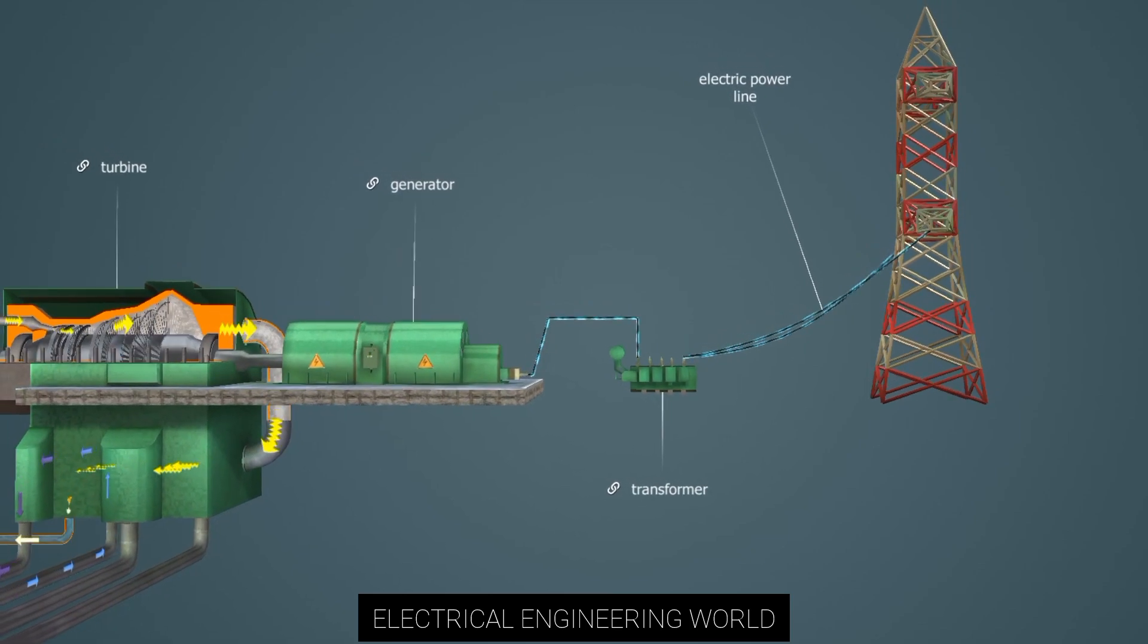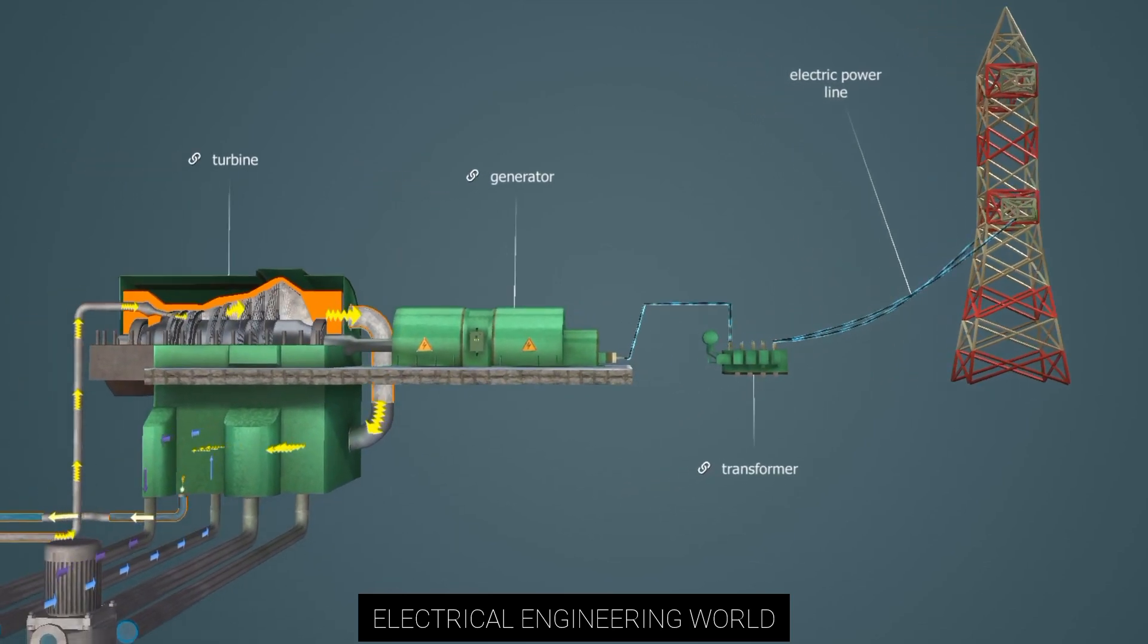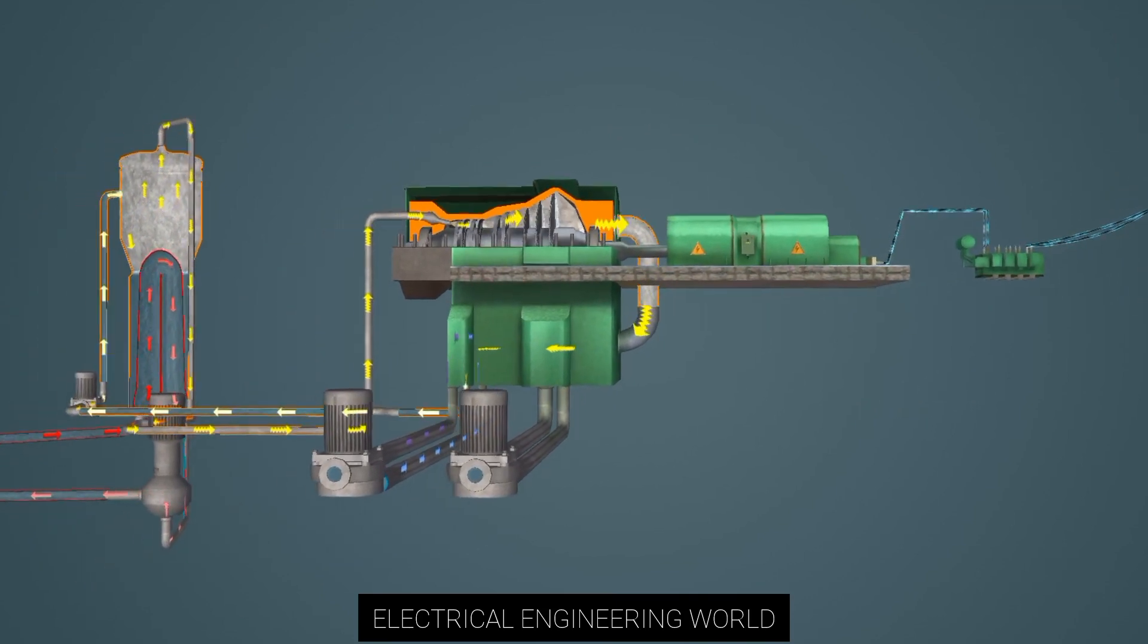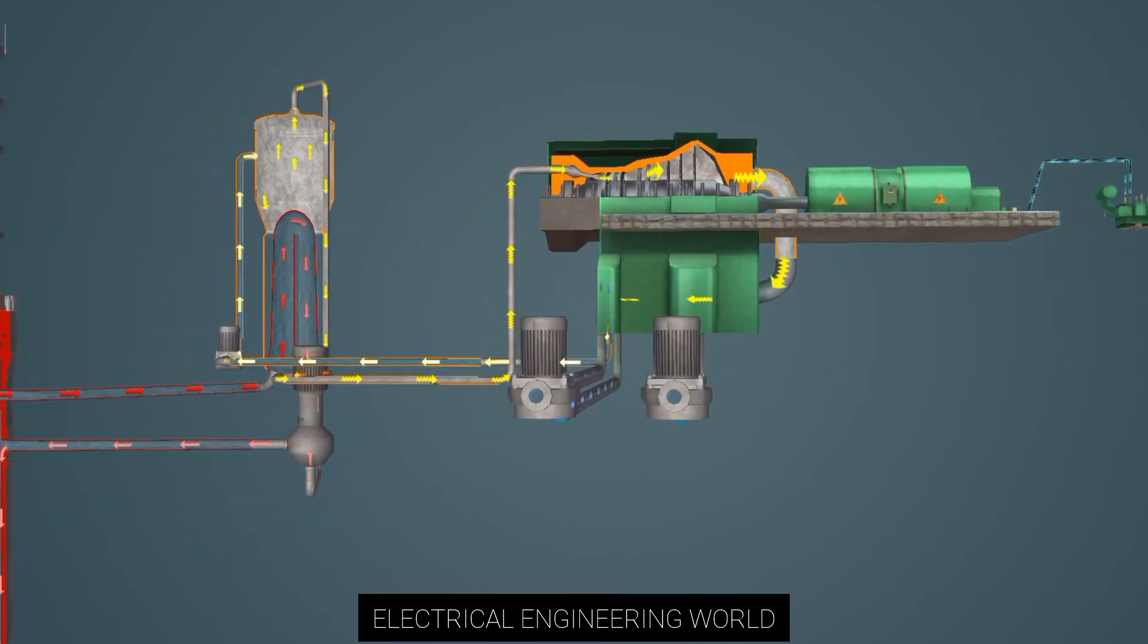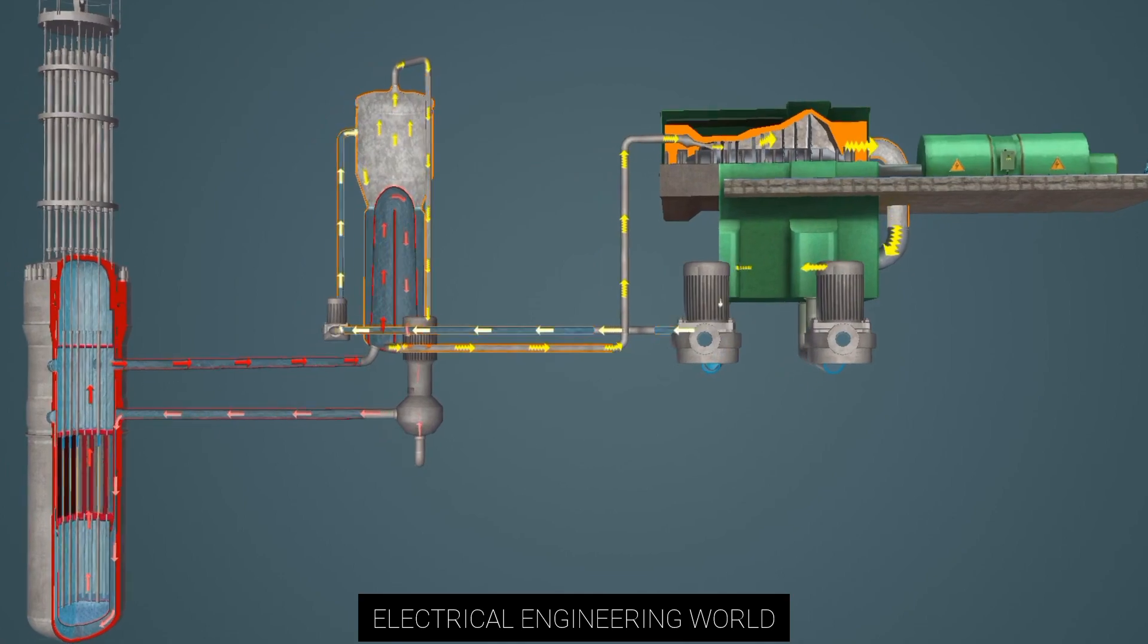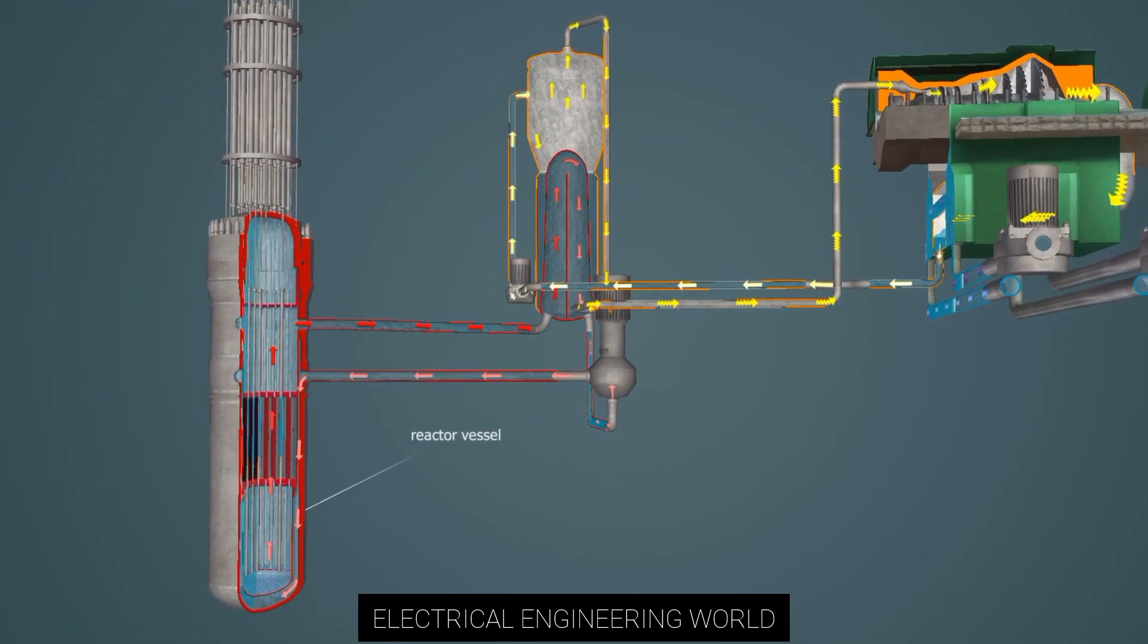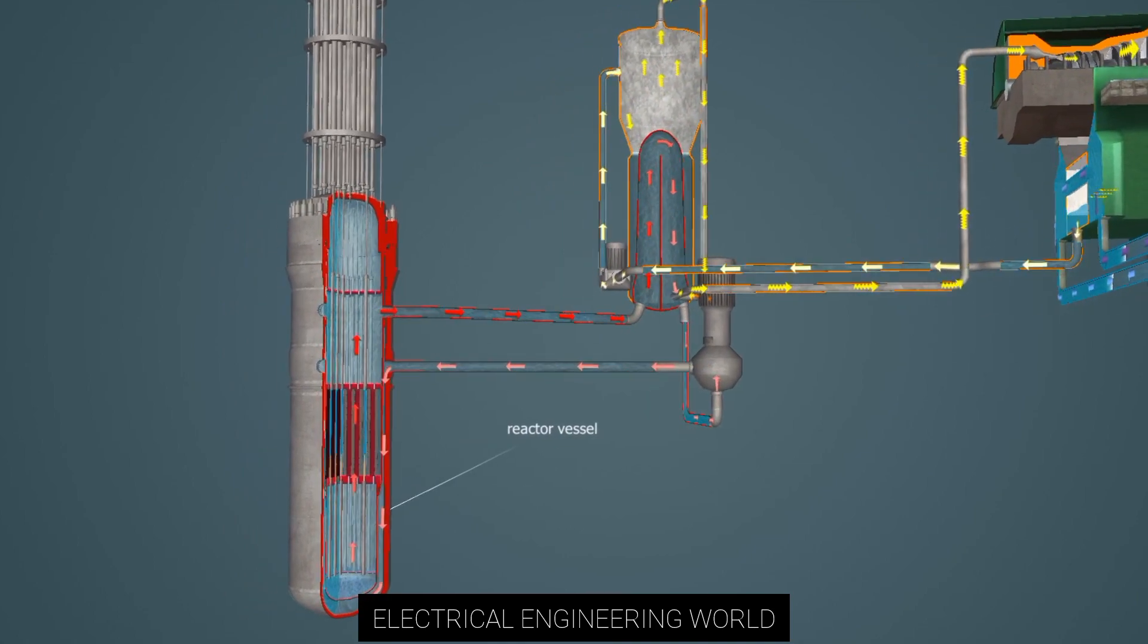The exhaust steam is then cooled with water. Since the water in the primary and secondary circuits circulates in separate closed systems, the cooling water will not contain any radioactive particles.